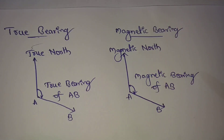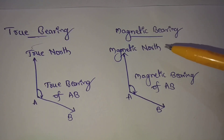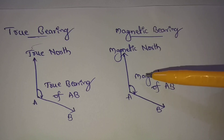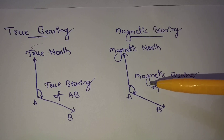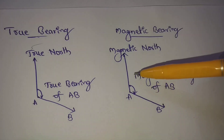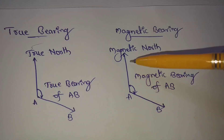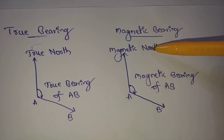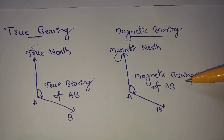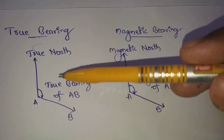The next one is magnetic bearing. The magnetic bearing of a line is the horizontal angle which the line AB makes with the magnetic north. This is the magnetic north, this is the AB line, and this angle between them is the magnetic bearing of AB.